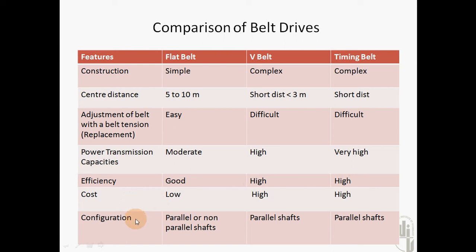The arrangement of the shafts is possible in case of flat belt as a parallel or non-parallel shaft arrangement, whereas in case of V belts these are always operated over parallel shafts, and timing belts are also operated over parallel shafts.